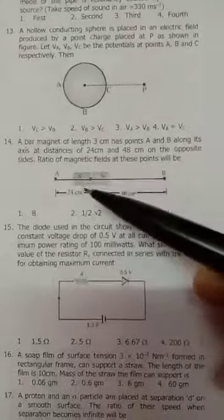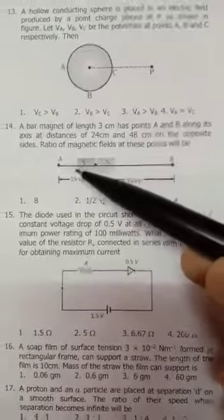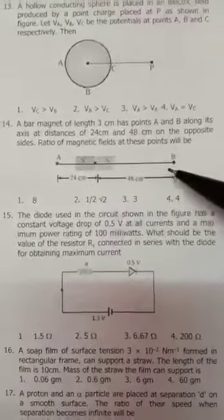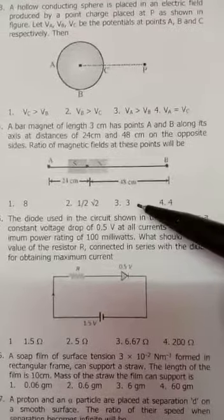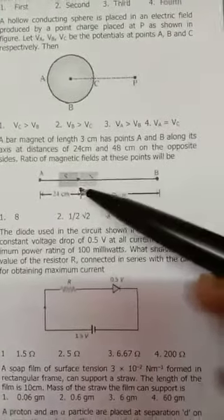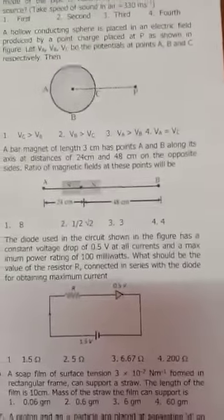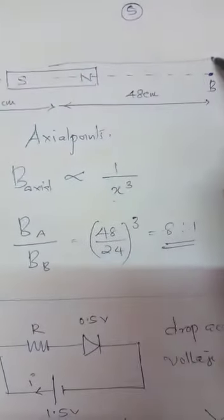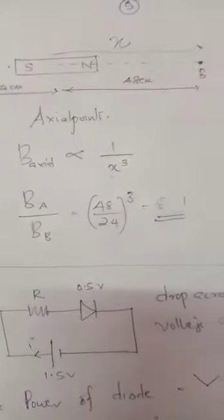Question number 14. You can see the magnet, the axial line AB. The field ratio. The axial field equation we know is μ₀ by 4π times 2m by r³. Therefore m is dipole moment, that is a constant. μ₀ by 4π is a constant. Therefore it is inversely proportional to distance cubed. Axial field inversely proportional to distance from the center of the magnet dipole. It is 48, this is 24. Therefore the ratio BA by BB equals field at A by field at B, 48 by 24 cubed, 8 to 1.